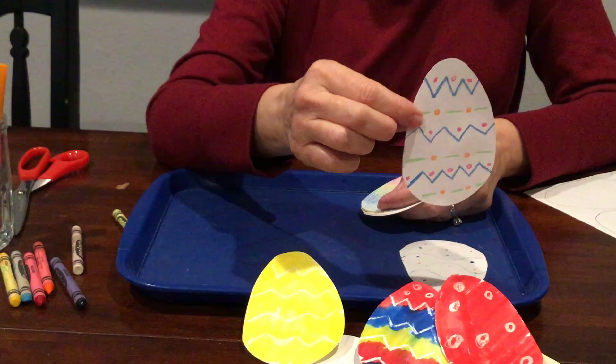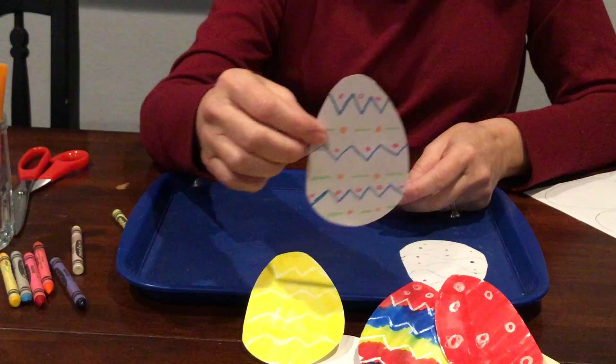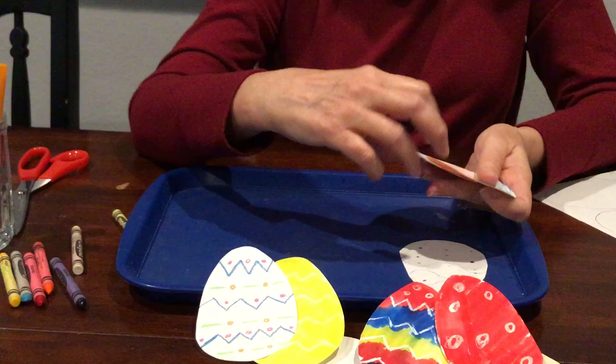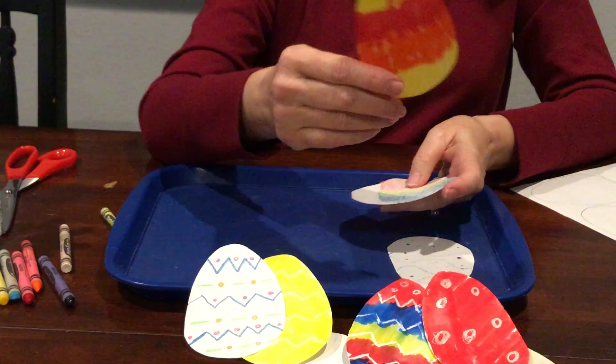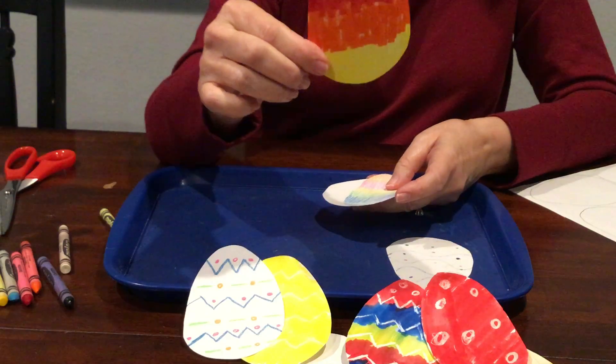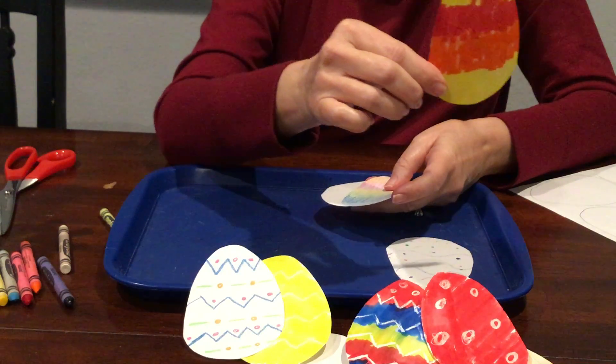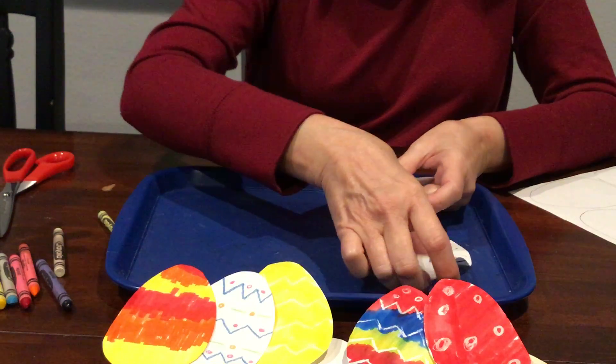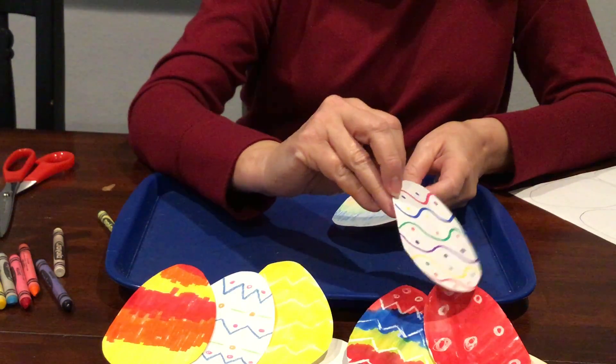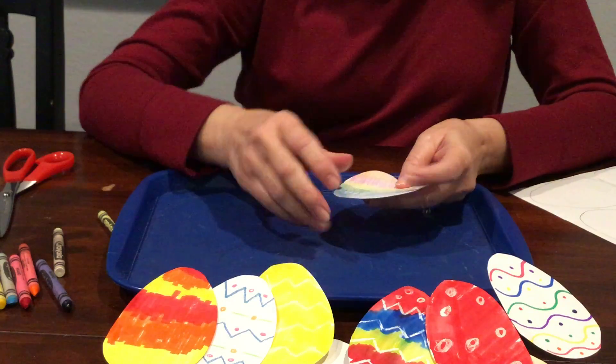Another thing you can do with your eggs is just draw designs. You could do patterns. Here's a marker one that we did where I colored the whole paper and then cut the egg out. You can do the same thing that I showed you with crayons. There's so many ways to do your eggs.